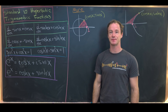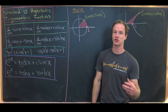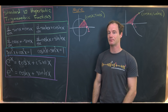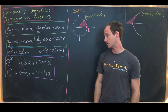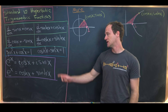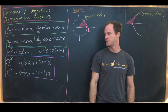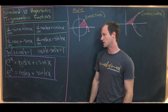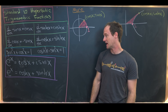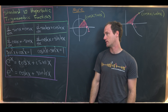Next, let's look at their relation to exponential functions. There's a well-known relation between trigonometric functions and complex exponential functions. Euler's famous formula says e to the ix is cosine x plus i sine x. If we take the i out of the exponent on the left-hand side, we have e to the x is hyperbolic cosine plus hyperbolic sine.